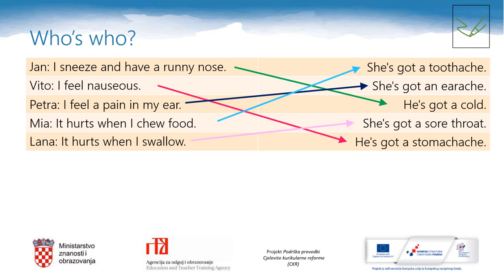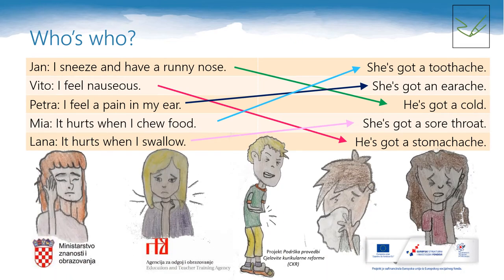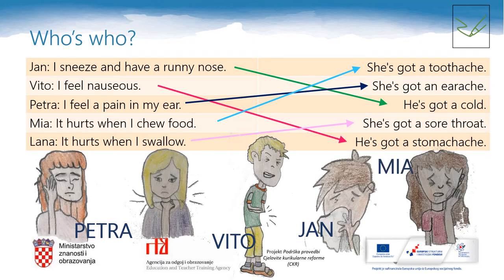Let's have a look at their pictures now. Can you guess who is who? The one with the runny nose is Jan. Can you guess which one is Vita? That was easy because there are only two boys. Which one is Petra? This is Petra with a knee ache. And what about Mia? This one is Mia with a toothache. And finally, this is Lana with a sore throat.